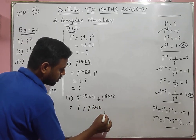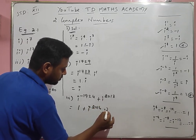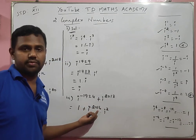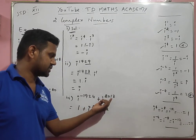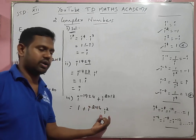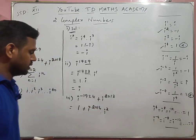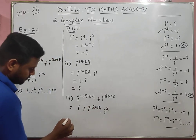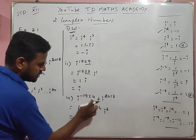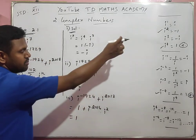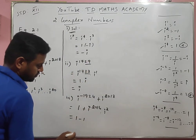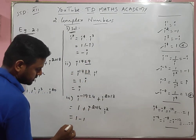For i power 2018, we rewrite it as i power 2016 into i power 2. Since 18 is not divisible by 4, but 16 is, i power 2016 equals 1. So the expression becomes 1 plus i squared, which equals 1 plus minus 1, equals 0.